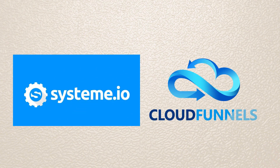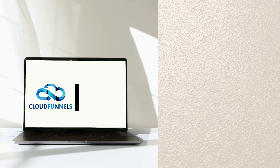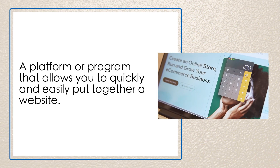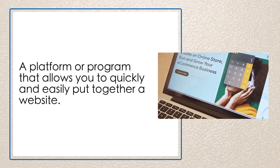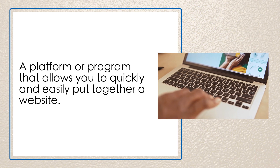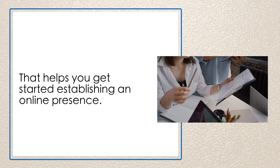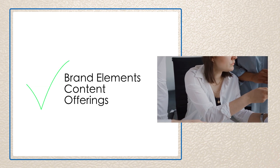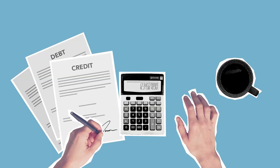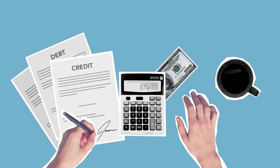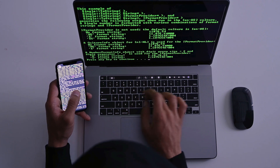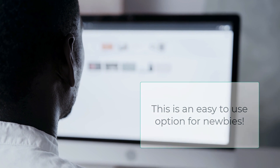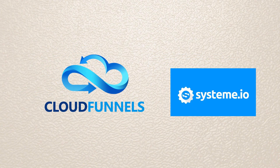System.io vs Cloud Funnels – which is better? Cloud Funnels and System.io are both online business builder softwares. An online business builder is a platform or program that allows you to quickly and easily put together a website that helps you establish an online presence outfitted with your brand's elements, content, and offerings tailored to your business. It saves you a lot of time and money. Most online builders come with accompanying hosting services so you don't have to worry about that extra technical hoop. This is an easy-to-use option for newbies.